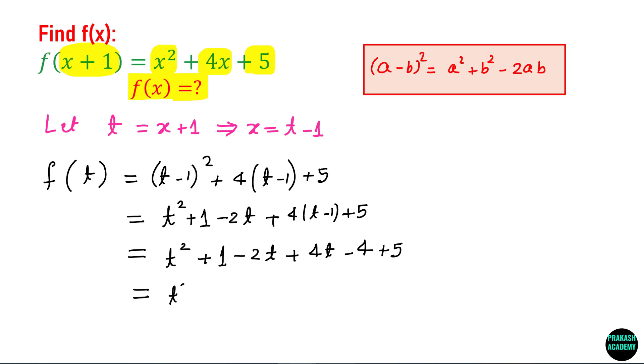So you have t squared here and then you have 4t and here you have minus 2t. So this becomes simply 2t. And then you have 1 plus 5, 6 minus 4, that is 2.